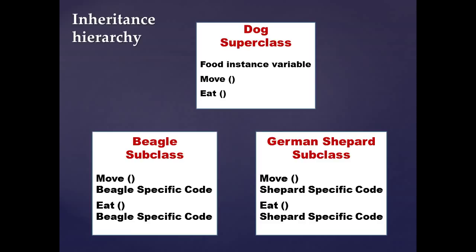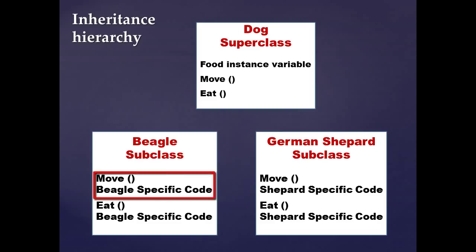Superclasses are less specific and subclasses are more specific. If you take a look at the move method in the superclass, that will be less specific than the beagle subclass move method. You can see here that's why I put beagle-specific code — because German shepherds and beagles might move a little bit differently, and they probably eat a little bit differently too.